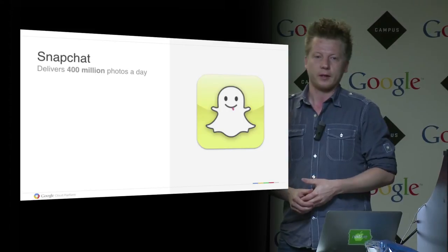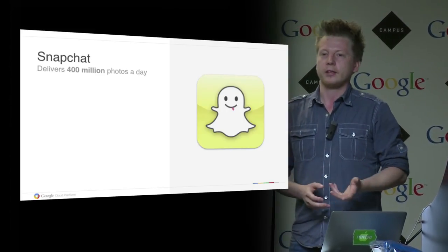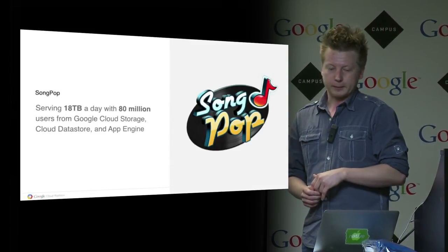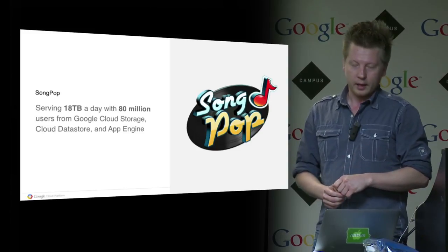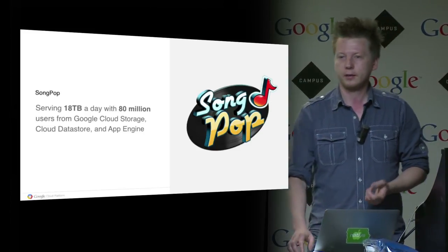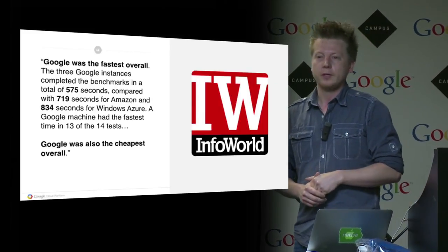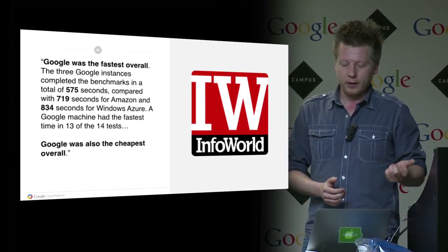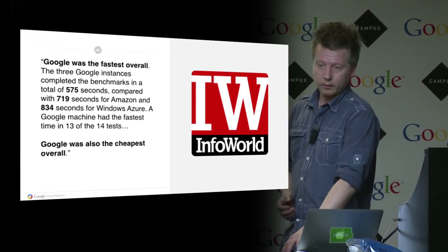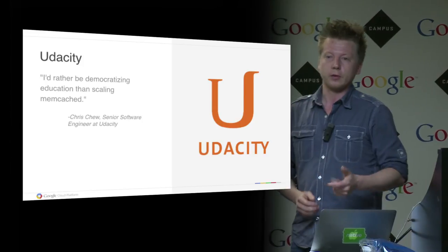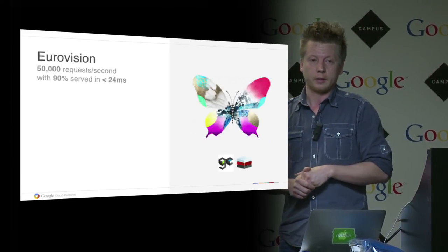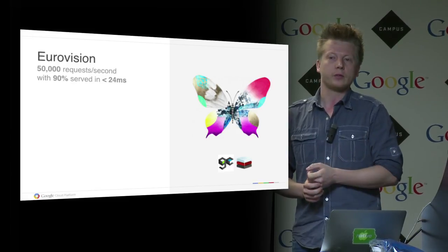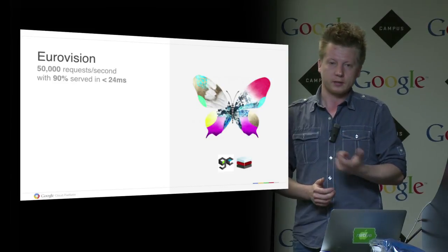Let me introduce you to some of our customers. Many of you know Snapchat — a photo sharing service — they deliver 400 million photos every day. Songpop scaled to over 80 million users and serves 18 terabytes of songs every day using Cloud Platform. Infoworld did a benchmark comparing Google, Amazon, and Microsoft public cloud — the result was that Google was the fastest and the cheapest overall. Udacity uses Cloud Platform to provide online courses. Eurovision, one of the largest TV song contest events, can handle 50,000 requests per second, with 90% of those requests served in less than 24 milliseconds.